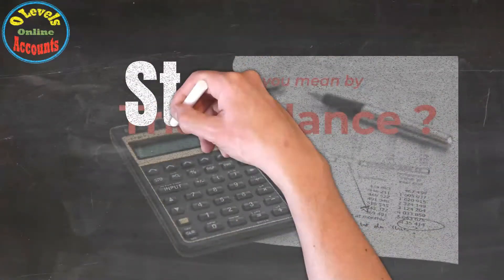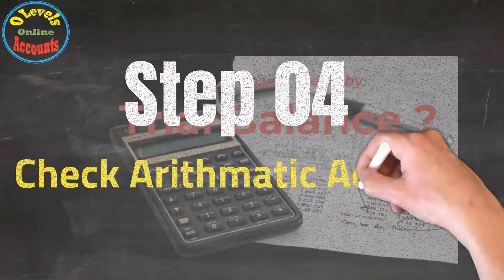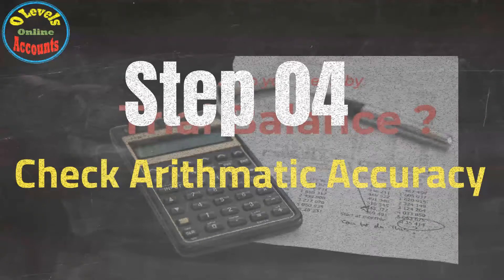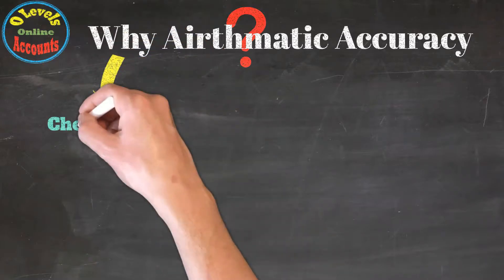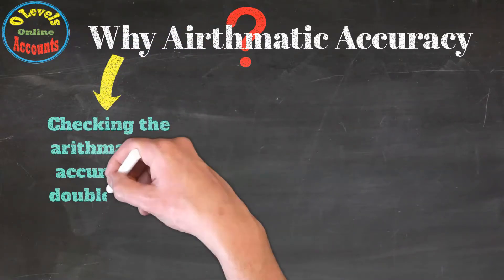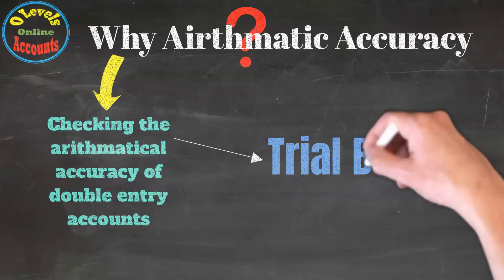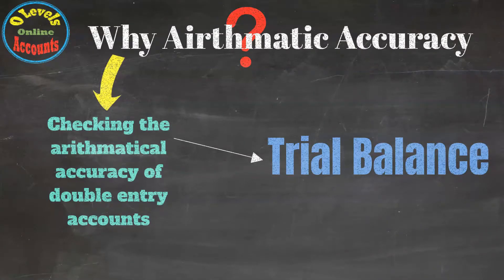The fourth step is checking the arithmetic accuracy of transactions. In this step, we check the accuracy of double entry accounts by preparing the trial balance, which we discussed in previous lessons.